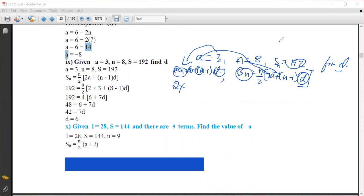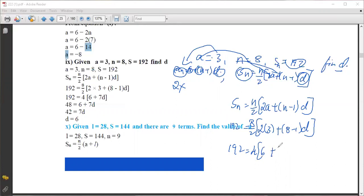We'll use the s_n formula. So s_n = n/2 * (2a + (n-1)d). Substituting the values: 192 = 8/2 * (2*3 + (8-1)d). This simplifies to 192 = 4 * (6 + 7d).